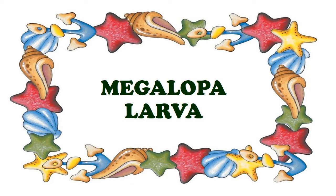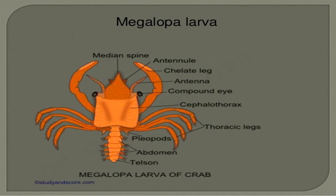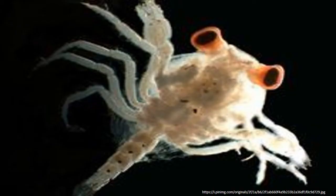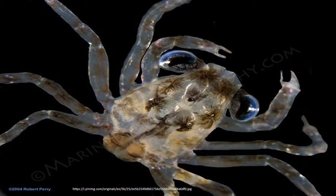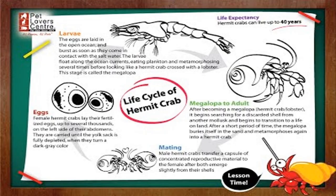Megalopa: in brachyuran Decapods or true crabs, Zoea metamorphoses into the Megalopa larva. It resembles to some extent the adult crab and possesses all 13 pairs of appendages. The abdomen bears six pairs of pleopods and is placed straight in line with the cephalothorax. In crabs, the Nauplius stage is passed within the egg which then hatches into the Zoea. By molting, it then forms the Megalopa and gets metamorphosed into an adult. In hermit crabs, the glaucothoe corresponds to a Megalopa with symmetrical abdomen and swimming pleopods.